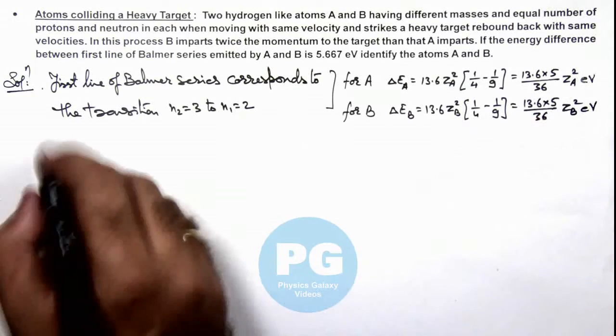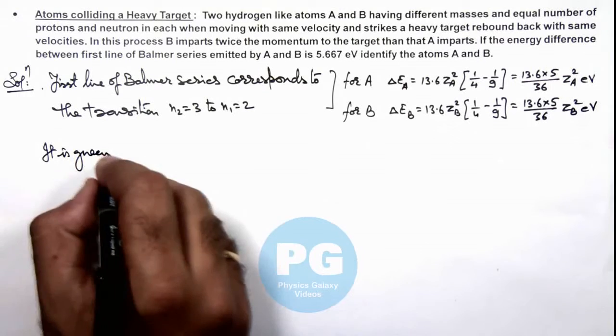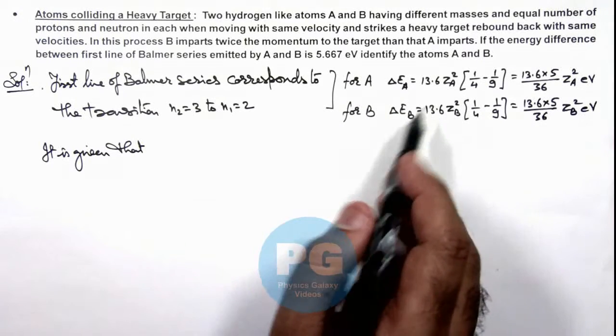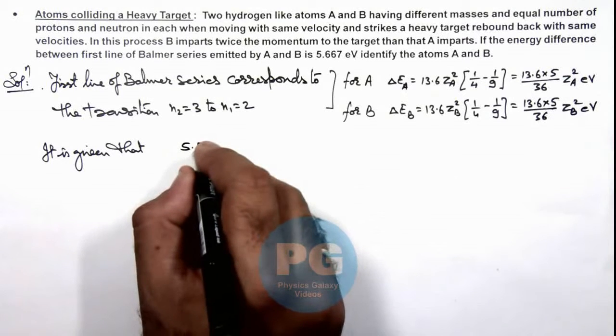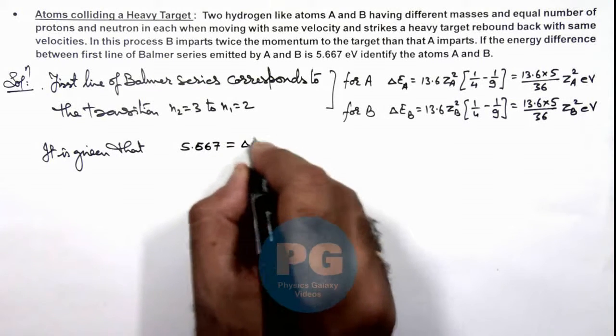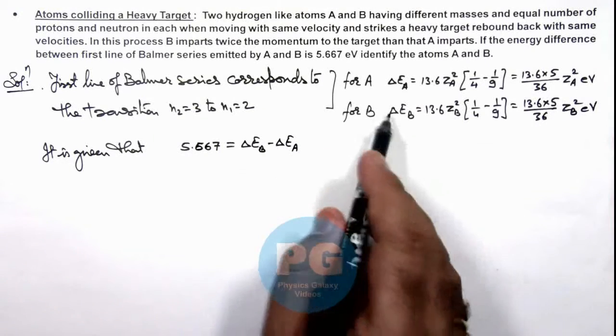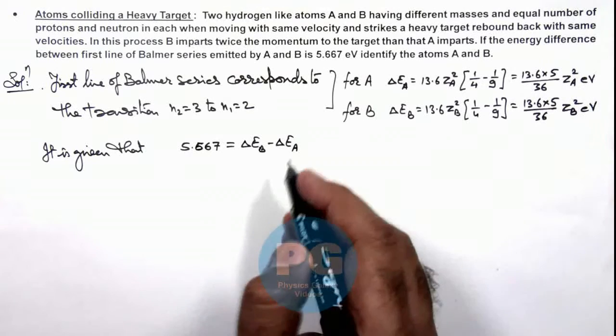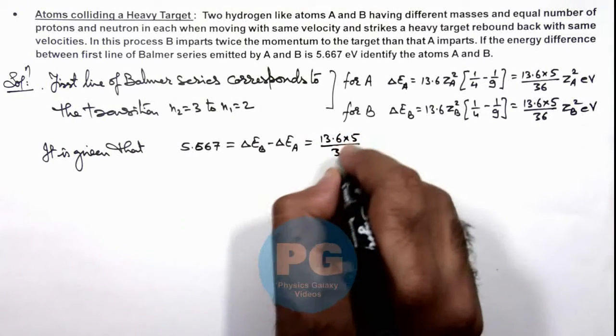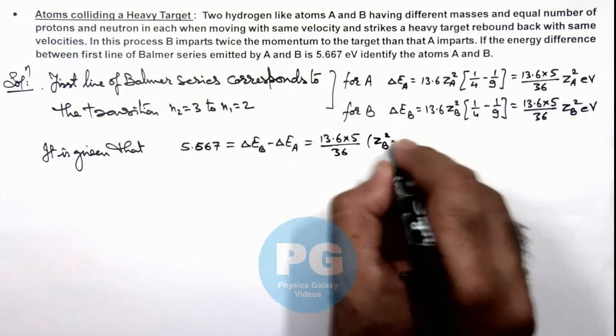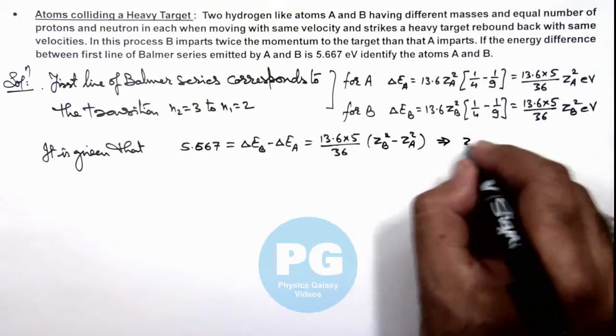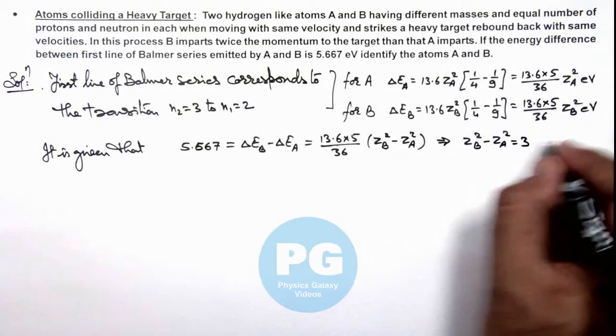It is given that the difference of these two energies corresponding to first line of Balmer series is 5.667, so this 5.667 should be equal to ΔEᵦ - ΔEₐ. Here I am assuming that ΔEᵦ is more than ΔEₐ, or I take Zᵦ greater than Zₐ. So here this value is 13.6 multiplied by 5/36, whole multiplied by Zᵦ² - Zₐ². On further simplifying this relation we get Zᵦ² - Zₐ² is equal to 3, that is our equation 1.